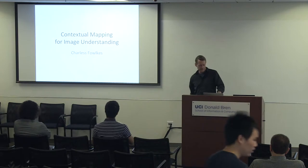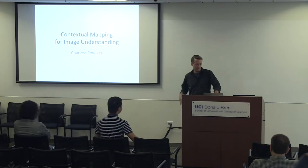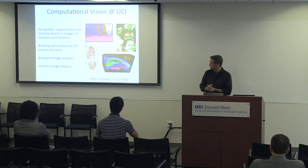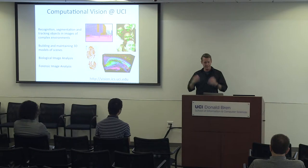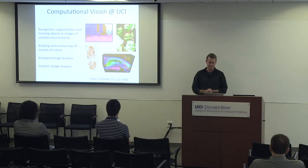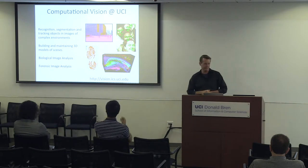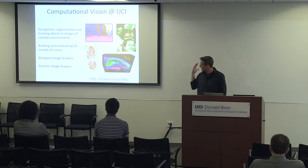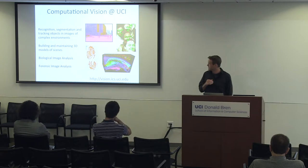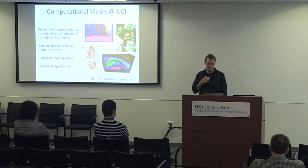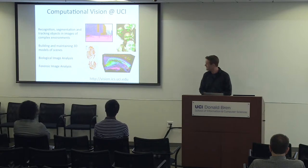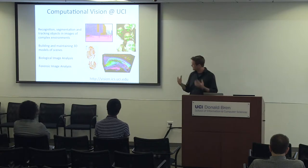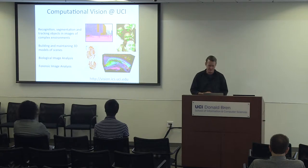My group here at UC Irvine works on problems in computational vision — how to understand what's going on in images. We're interested in taking images as input and recognizing, segmenting, and tracking objects moving around in complex environments, building and maintaining models of scenes, and applying these to things like biological image analysis or forensic image analysis.